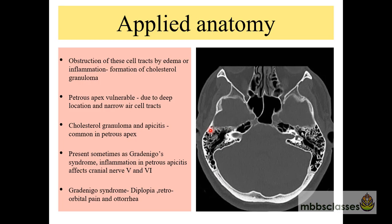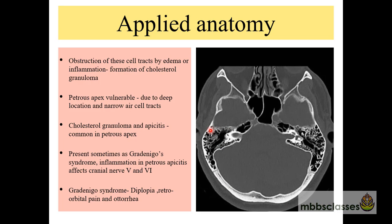Looking at this CT scan: this is the area of the mastoid, this is the area of the sigmoid sinus, so the posterior superior air cell tract will be running like this. This is the area of the petrous bone — you can see here this petrous bone is pneumatized. What is the importance of these air cell tracts? Obstruction of these air cell tracts by edema or any inflammation can lead to the formation of cholesterol granuloma.